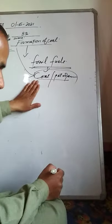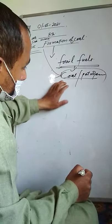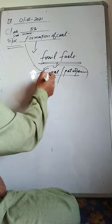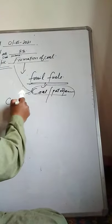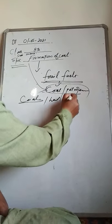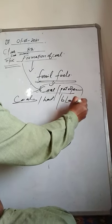Coal is a fossil fuel. This is an example of coal. This is the image. Coal is various shades of black in color.